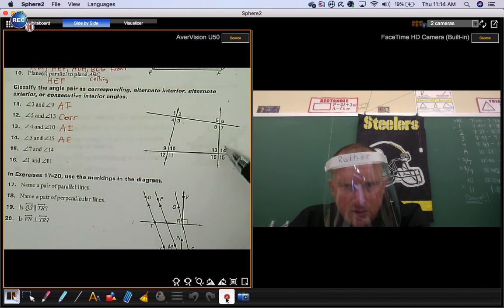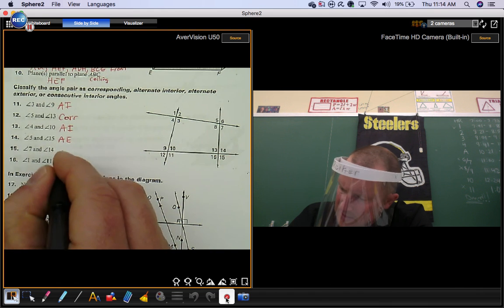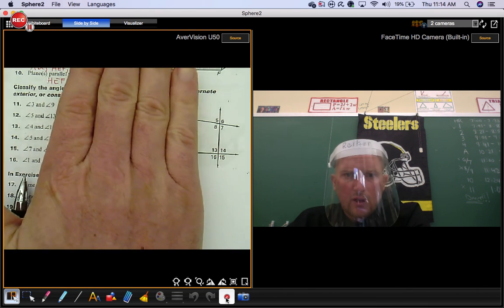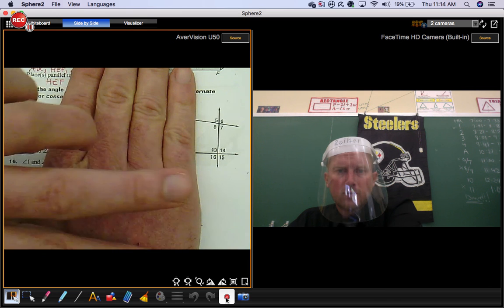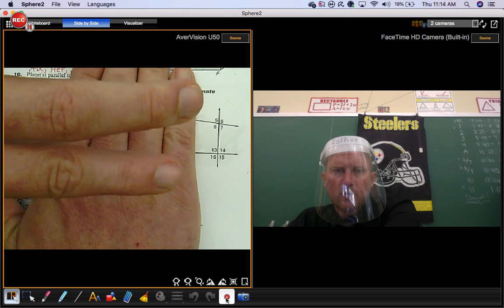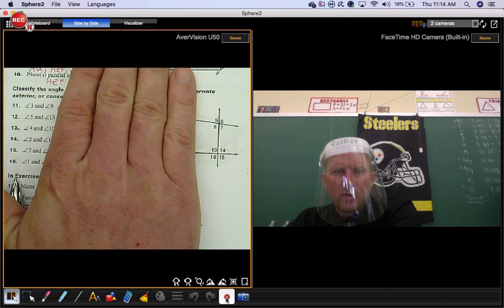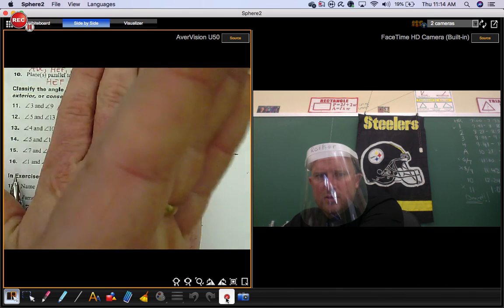Angle 7 and angle 14, this is an example of consecutive interior. They're in between the lines, these two lines, and they're on the same side of that transversal.